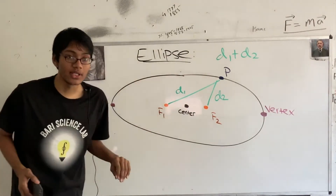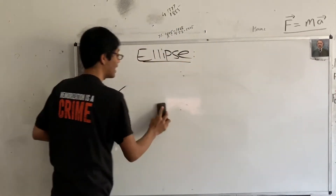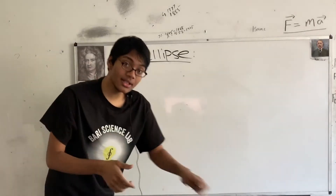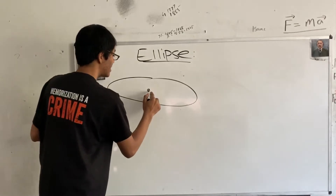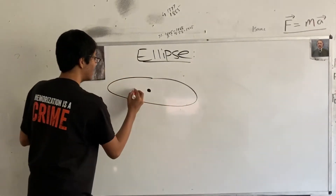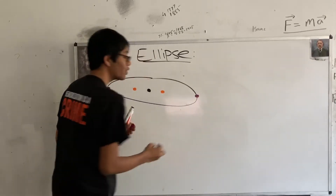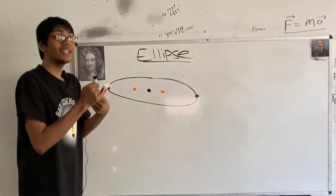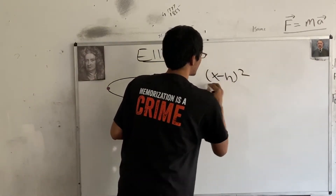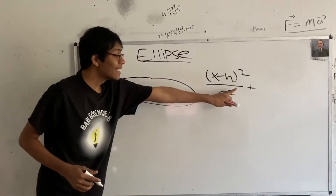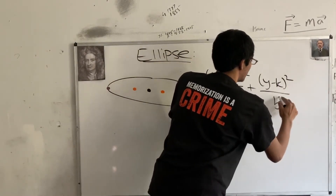There are two types of ellipses you're going to see. The first is the horizontal ellipse — a horizontal, frisbee-like shape. It's going to have its center right here, its two foci to the left and right of center, and vertices to the left and right. The equation of this horizontal ellipse is: (x minus h) squared over a squared, plus — that plus sign is an important identifier for an ellipse — plus (y minus k) squared over b squared equals 1.